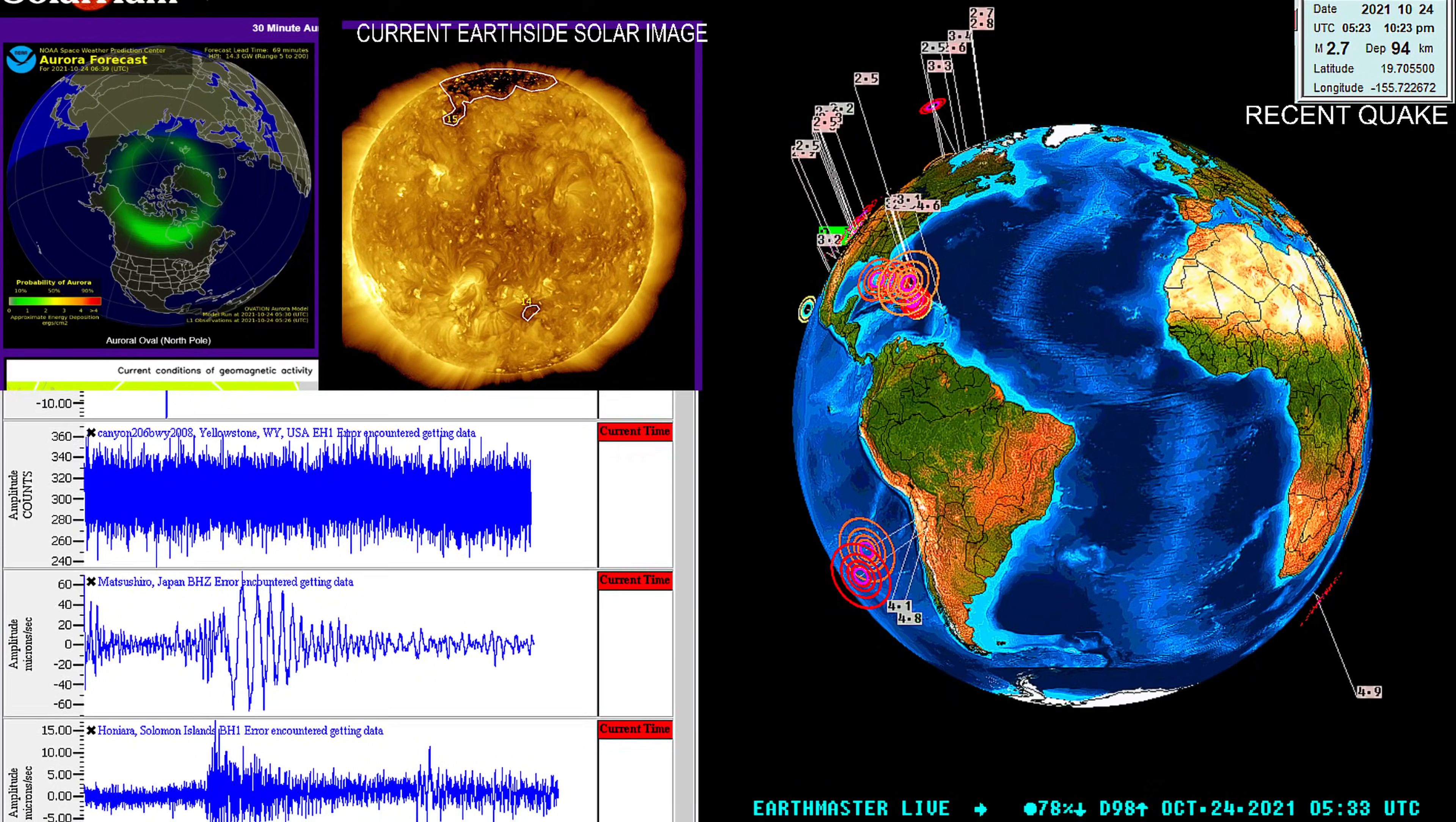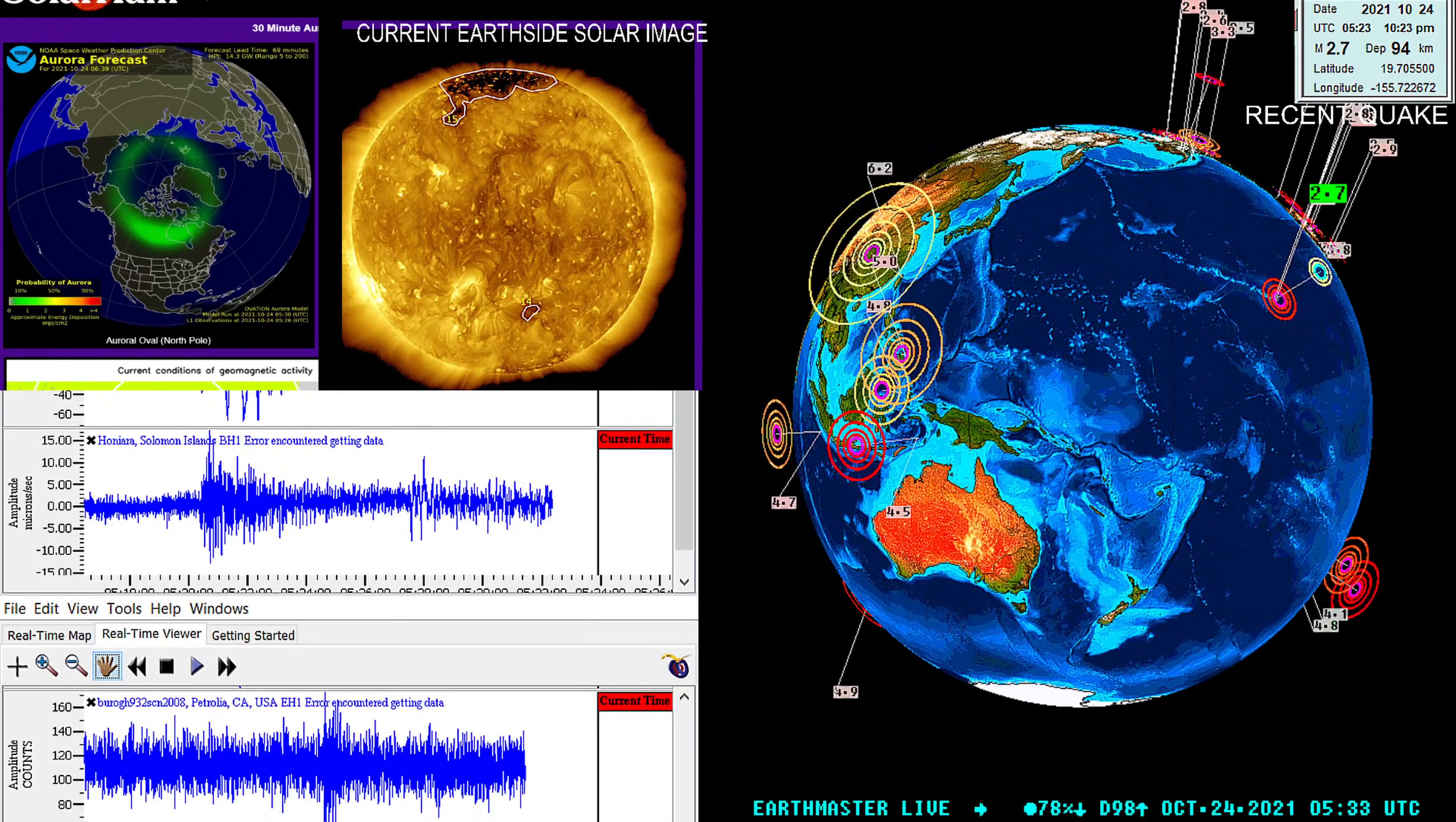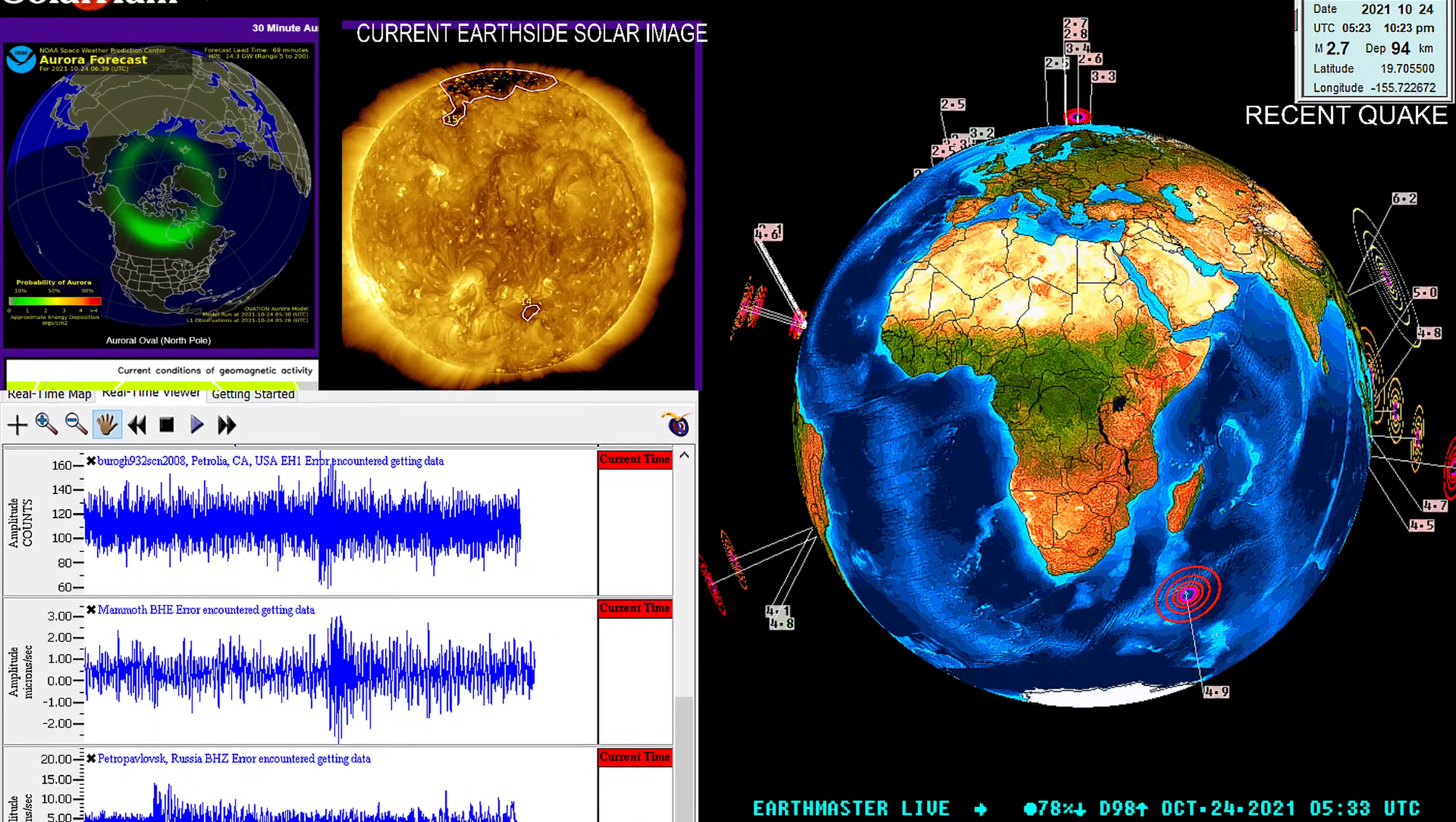Hi there guys, Earth Master here with a quick update video on a pretty large earthquake striking out around the Taiwan region. You can see the earthquake signature showing up on all the seismograph stations here. It is still October 23rd, 2021, Saturday night, 10:33 p.m. California time. And this earthquake signature is coming off of a 6.2 earthquake in the Taiwan region.